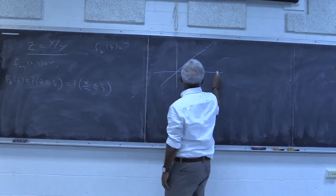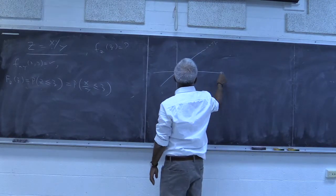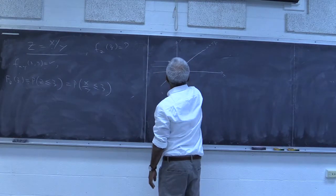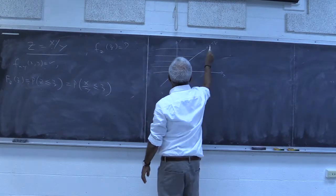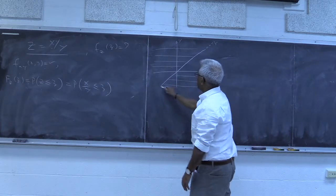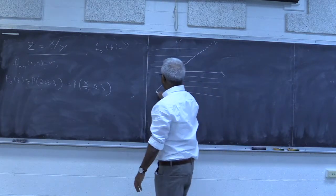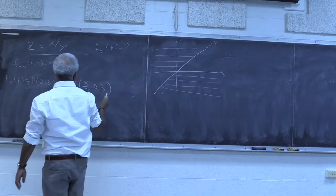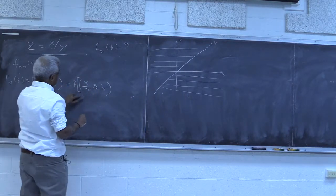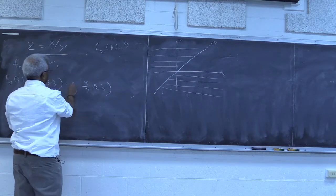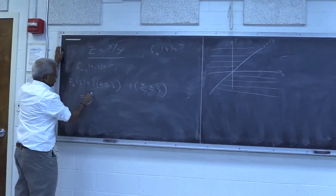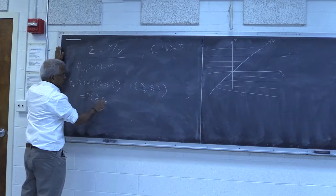On the xy-plane, this is x and this is y. The region where y is positive is here, and this is where the inequality will be satisfied. In the negative case, it is this region. So the easiest way to handle this is to write the probability of x over y less than or equal to z.